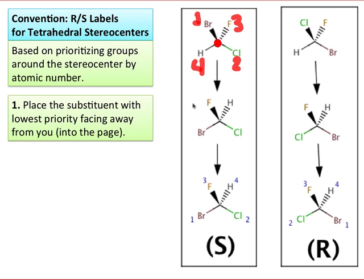After prioritizing, we then place the substituent of lowest priority back into the page. I've done that here by rotating the molecule so that the H is pointing away from us — it's still priority number four. Now the fluorine, bromine, and chlorine are in our field of vision, forming a sort of peace sign shape.